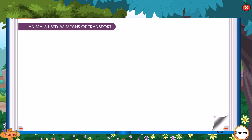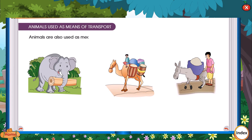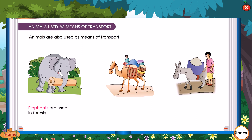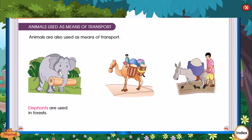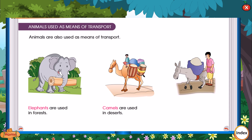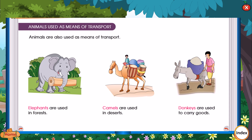Animals are also used as means of transport. Elephants are used in forests. Camels are used in deserts. Donkeys are used to carry goods.